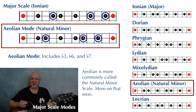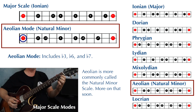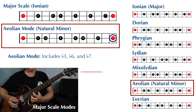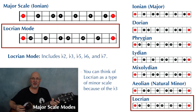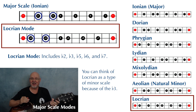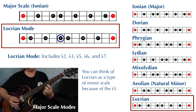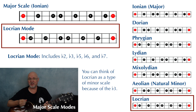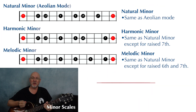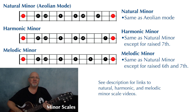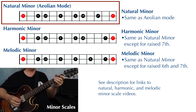The Aeolian mode is more commonly called the natural minor scale. And for the Locrian mode, it might be easier to list what is not flat — we've got a flat two, flat three, flat five, flat six, and flat seven. That takes care of our major scale and its modes. Now we're going to circle back to the Aeolian mode, better known as the natural minor scale, with a flat three, flat six, and flat seven.